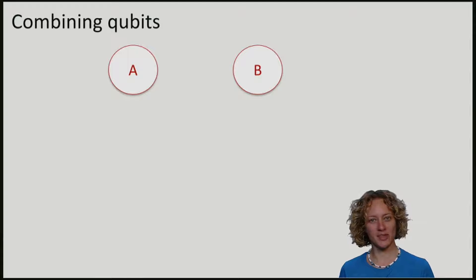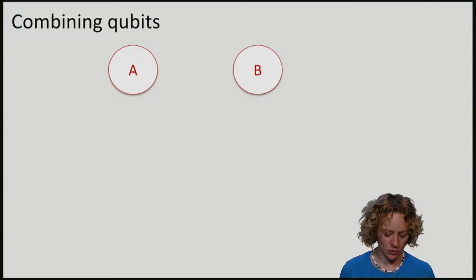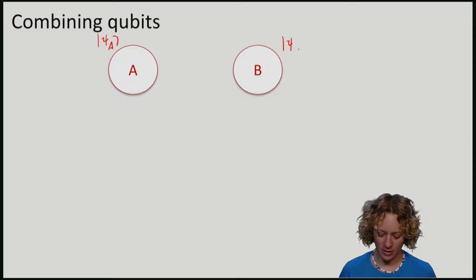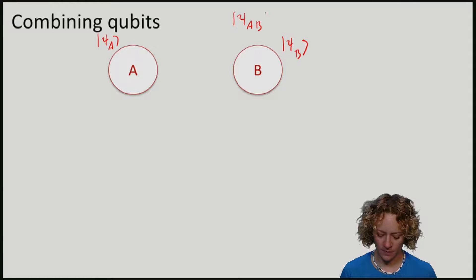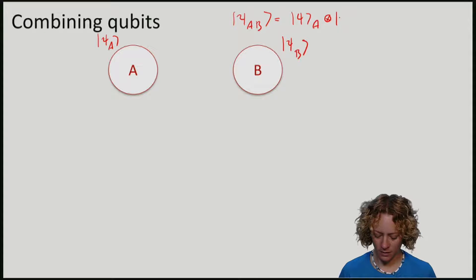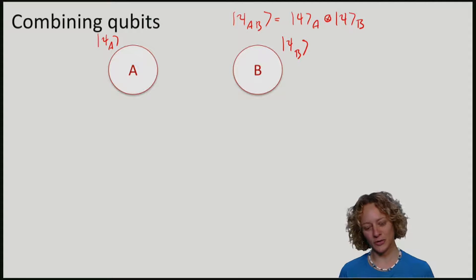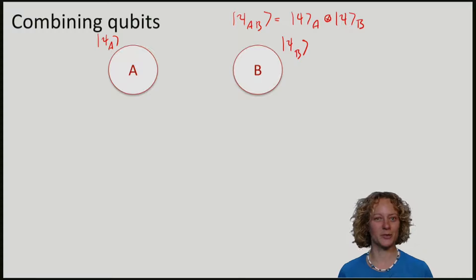If I have two qubits A and B, and I know they're in some pure states psi A and psi B, then we know how to compute the joint state of the two qubits using the tensor product. If you're unsure about this, check out week 0.